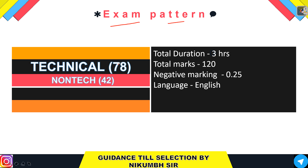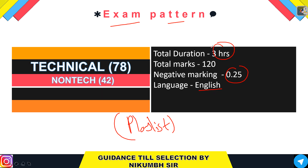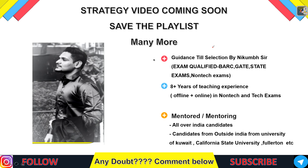Regarding exam pattern: Technical section has 78 questions, Non-Technical has 42 questions, total duration is three hours, 120 marks total, with negative marking of 0.25. About the syllabus, I will discuss it in detail — I have already made many videos on STQC. Today I will also make a fresh final strategy video for STQC which I will upload by evening, covering how to prepare and everything related to the exam.